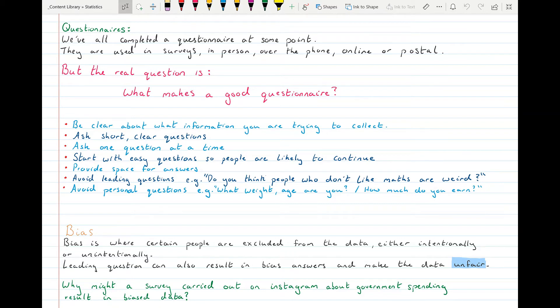Another one should be short, clear questions. You see this in maths exam papers even, where they'll start off telling you a story to try and confuse you. If you want to have a good questionnaire, you should have short, very clear questions. You should ask one question at a time, so that people will answer one question at a time. And start with easy questions, so that people are likely to continue.